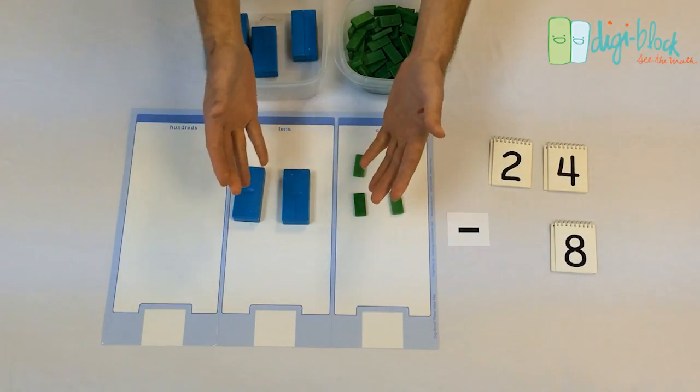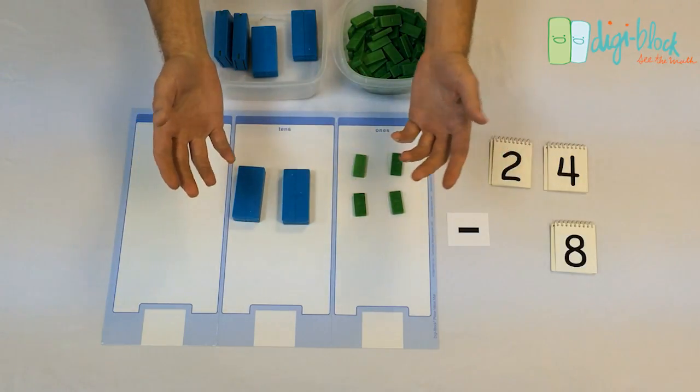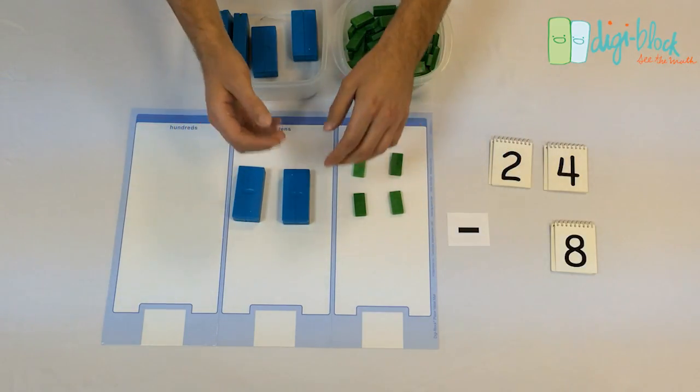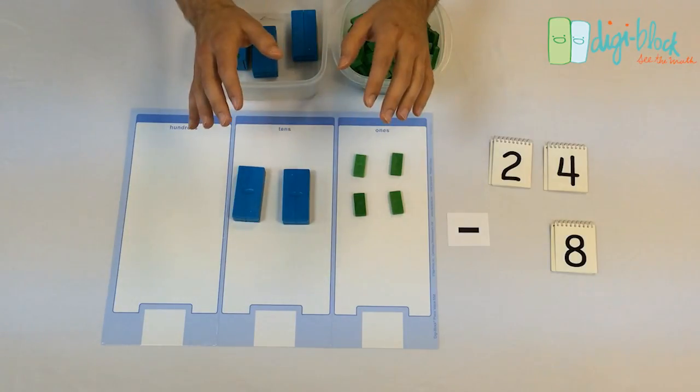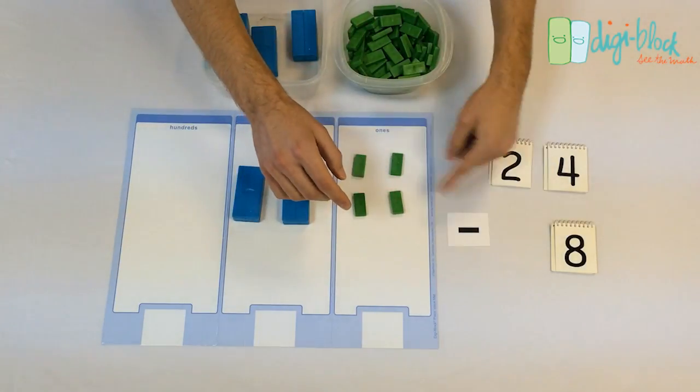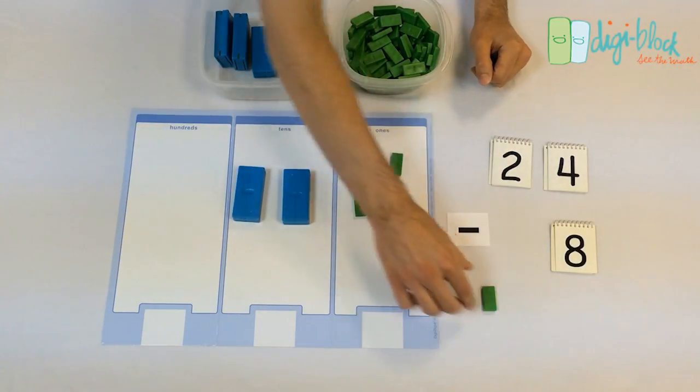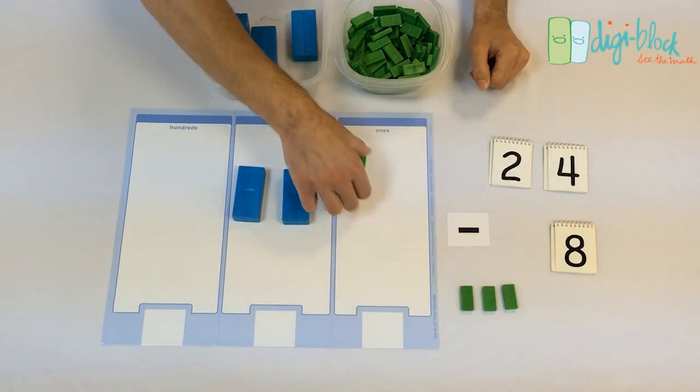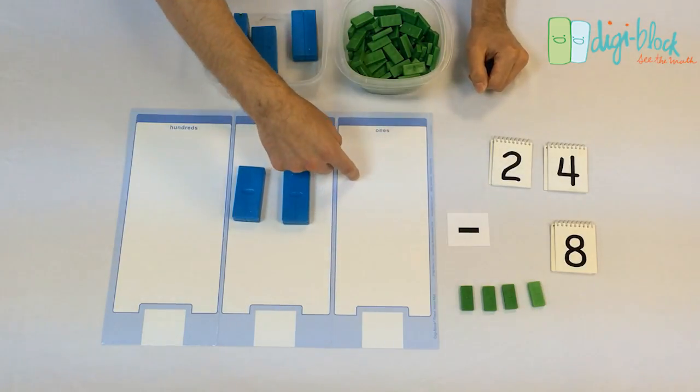The next thing I say is, take away 8. That's all I say, and I just wait and I see what happens. This is what usually happens. Usually, the student takes away the available ones, until there are no more ones here, and they're stuck.